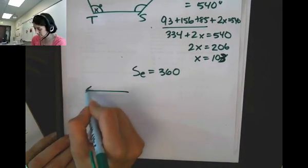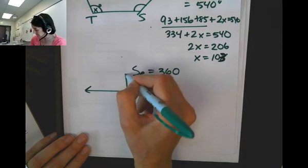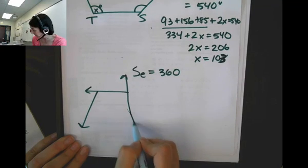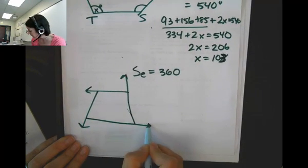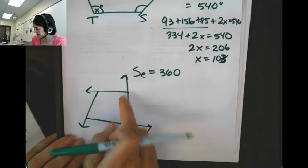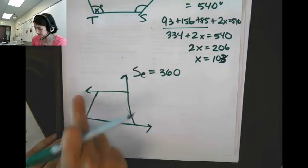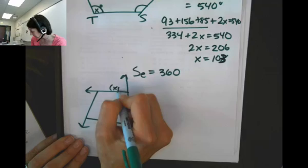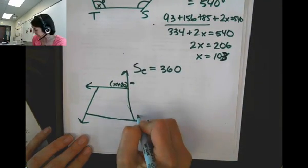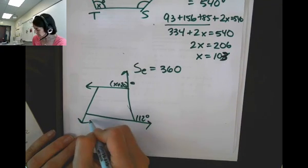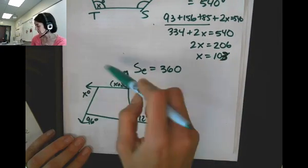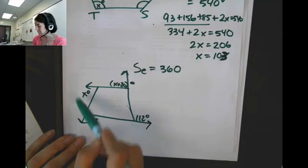So I'm going to just do a quick problem. I'm going to draw in here a quadrilateral. Let's have this go down a bit. And again, so I'm going to be concerned with these exterior angles, all in the same position. Let's call this one x plus 20 degrees, 112 degrees, 96 degrees, and x degrees.